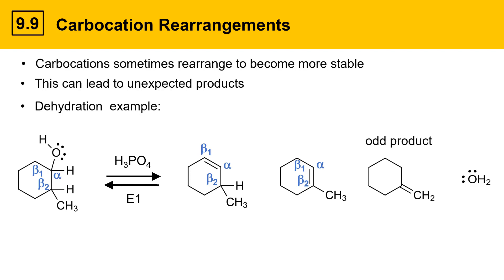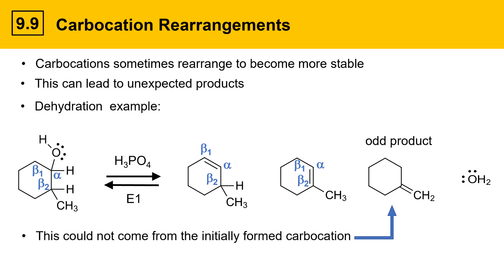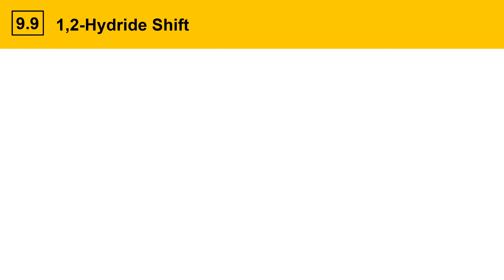This is an odd product. There is no way that the starting carbocation from this particular reaction could generate a double bond in this position. Something strange is going on here, and we'll need to look into carbocation behavior a little more deeply to understand it.